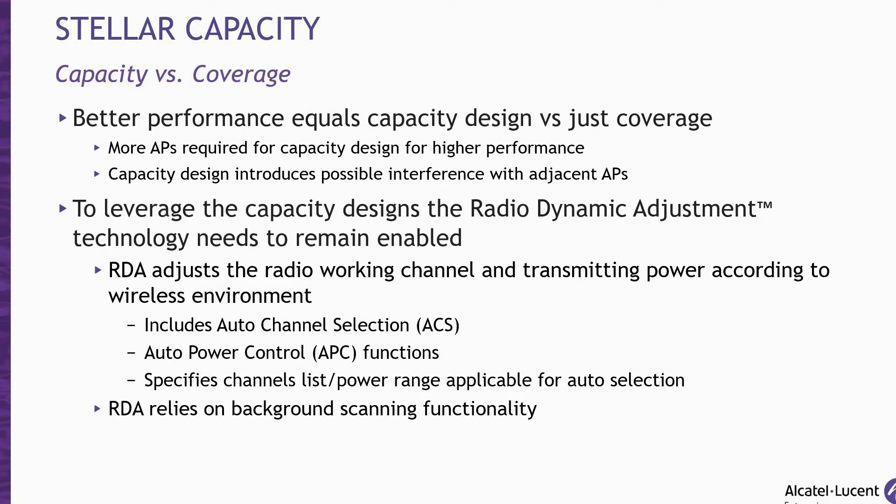Background scanning technology is used in multiple functions to examine the radio frequency environment in which the wireless network is operating, discovering neighboring APs, and identifying interference and also attacks. Background scanning is the basis of some advanced features such as the wireless IDS/IPS and the Radio Dynamic Adjustment Technology, which in turn leverages the auto channel selection and auto power control mechanisms. The ACS is recommended for the AP to check and select the best channel for client communications, and the AP checks and selects the best power settings so they don't interfere with other APs.